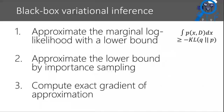Another example is black box variational inference, where you're trying to approximate the posterior distribution over some variables in a probabilistic program. Typically you start by approximating the marginal log likelihood with some lower bound. But then you realize this lower bound can't be computed exactly, so you approximate that lower bound by importance sampling - a different use of importance sampling than before. You could even do mini-batching on top, which is yet another form of approximation. And then finally, at the end of all that, you compute the exact gradient of the approximation. Same story: approximation happens first, then you take autodiff.